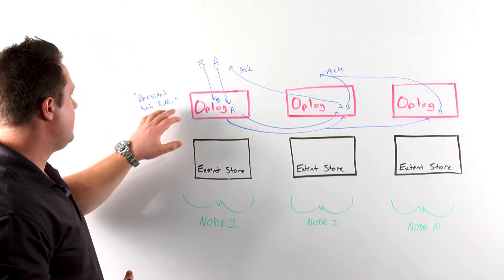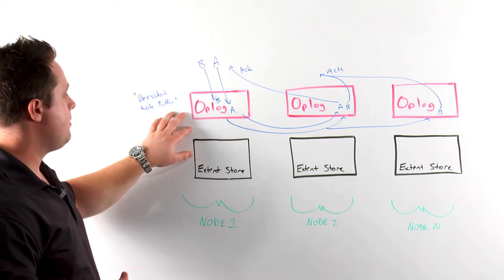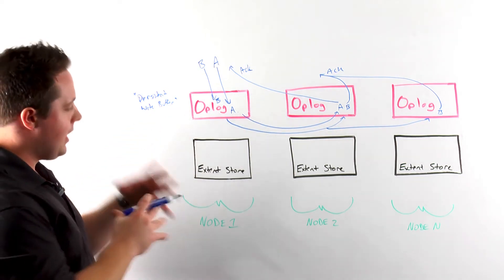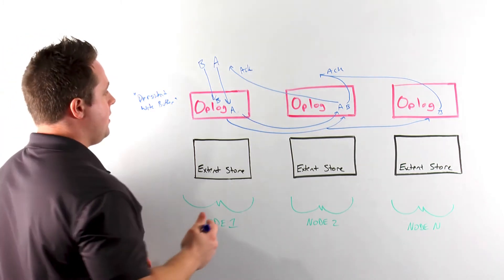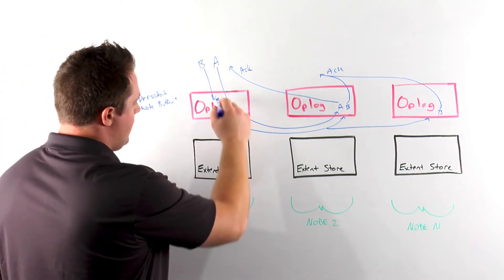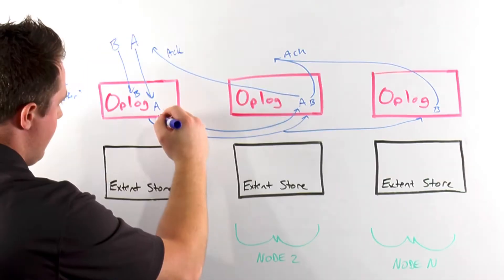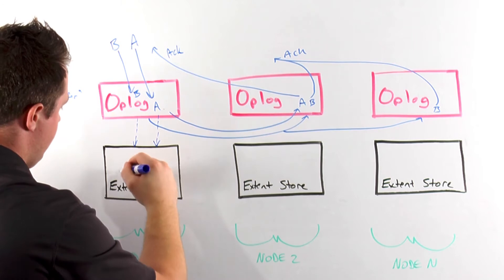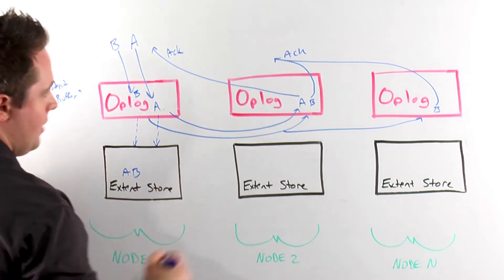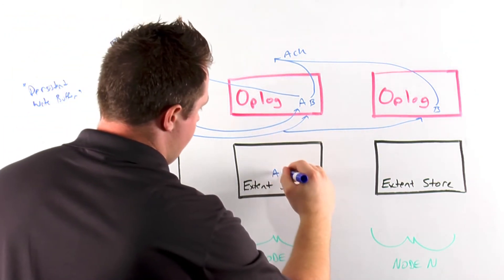As we previously mentioned, the op-log is really a persistent write buffer, which allows us to handle bursts of random writes, coalesce them, and then sequentially drain them on the back end. So in this example, if we have data A and B here, that would then be drained down into our extent store. In here, I would have my copies of A and B, similar over here.